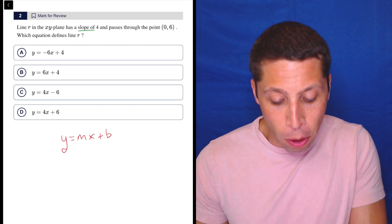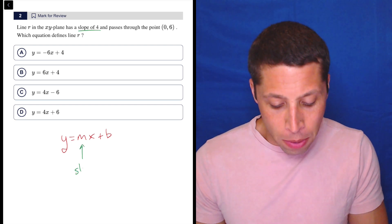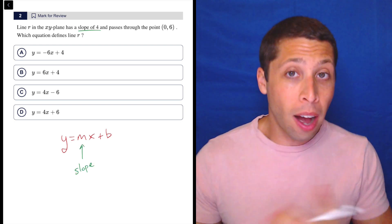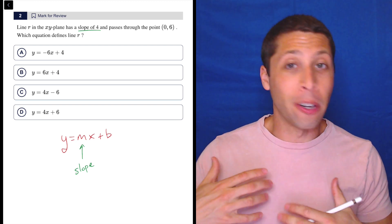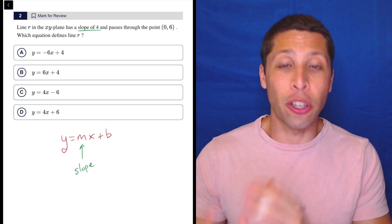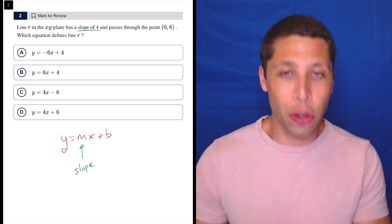We can take a look here at the slope of 4. Remember the slope is the m portion of y equals mx plus b. Now no matter what that letter is, it's basically just always the part that's attached to the x.